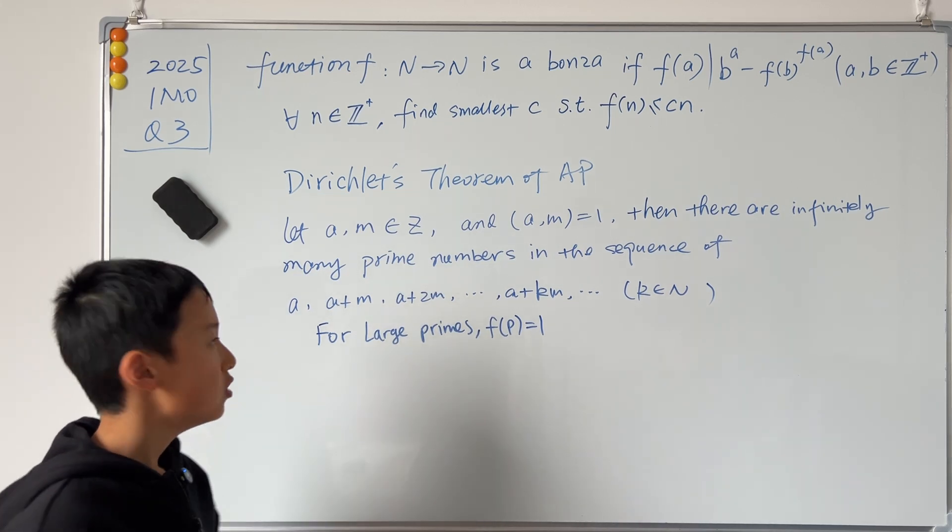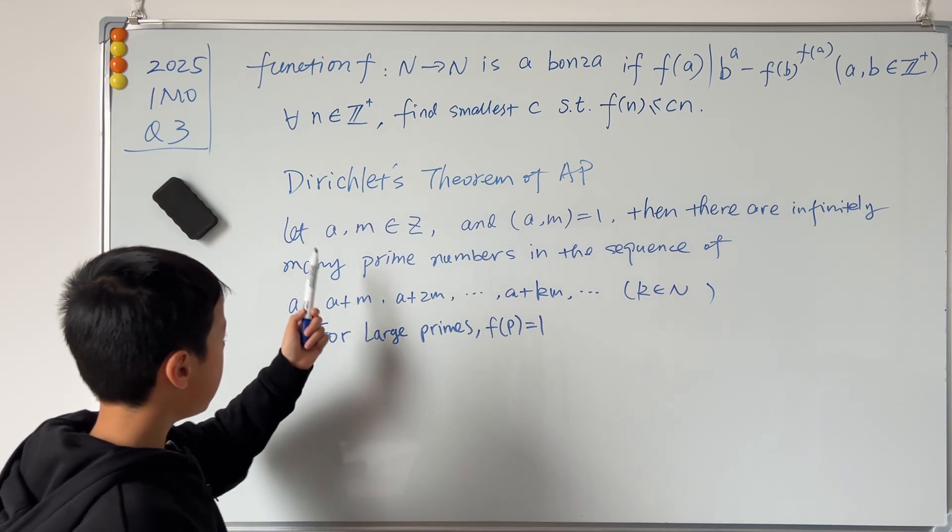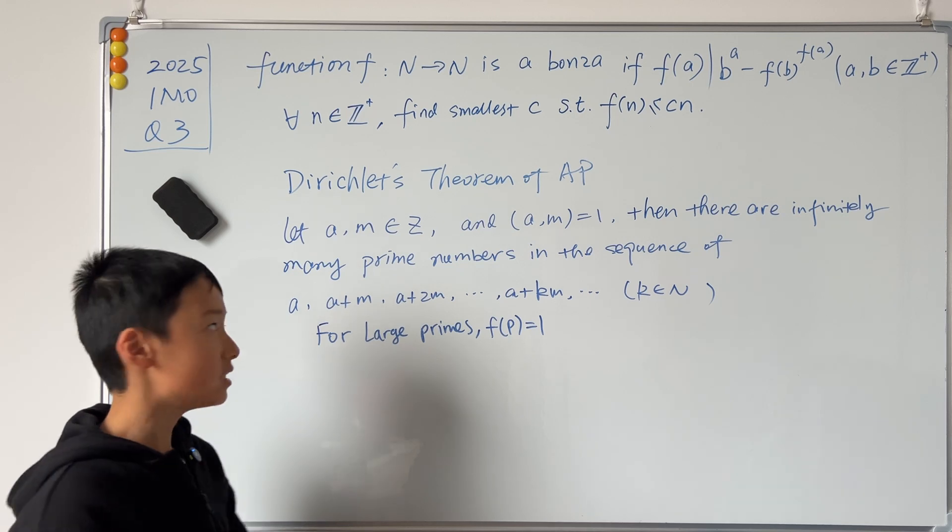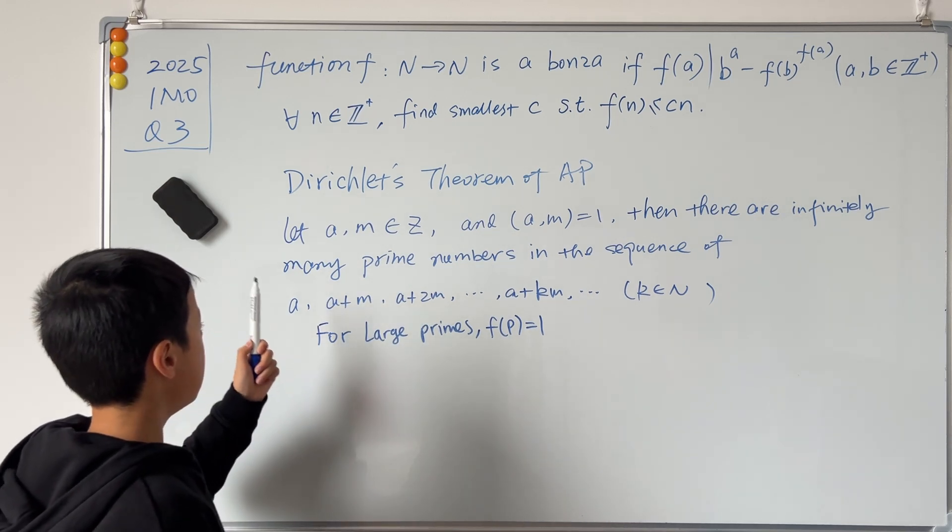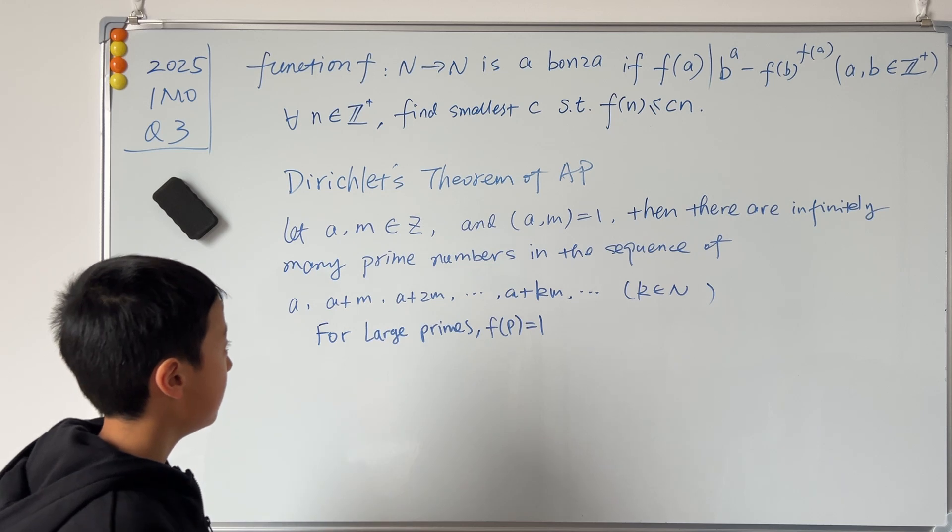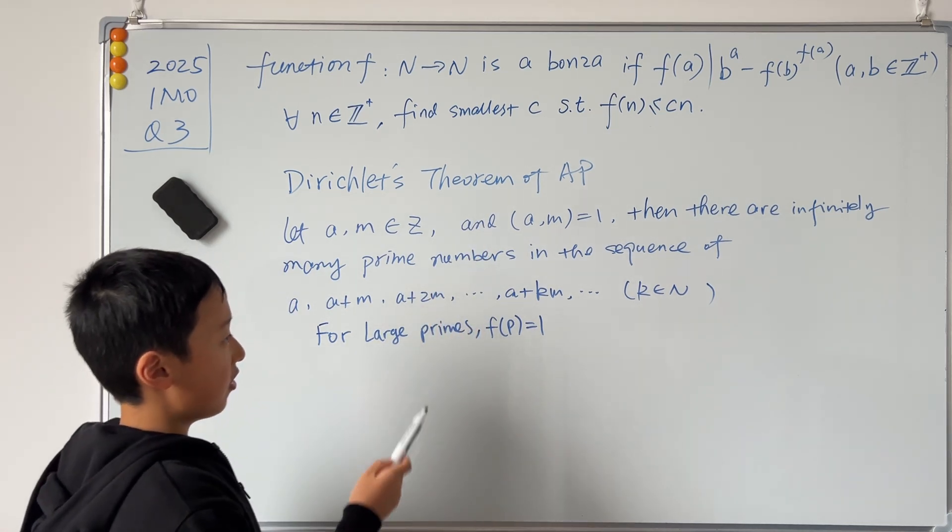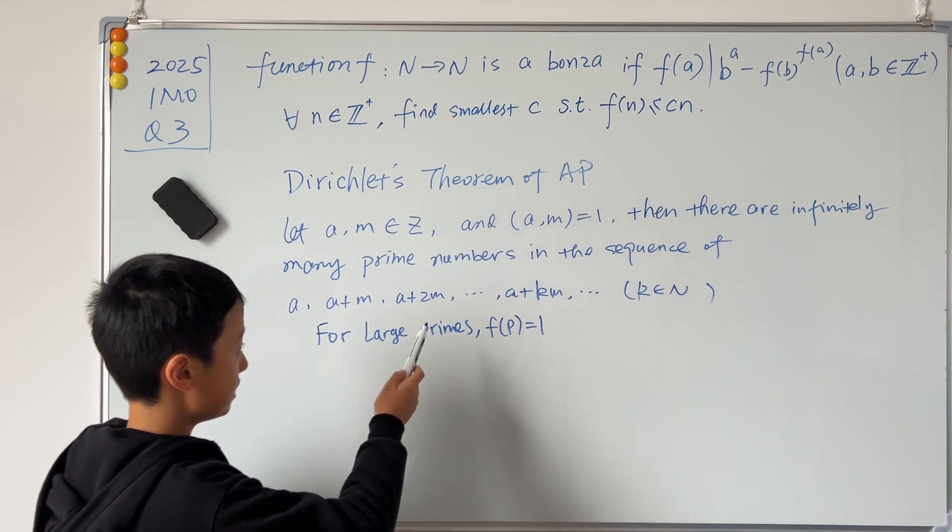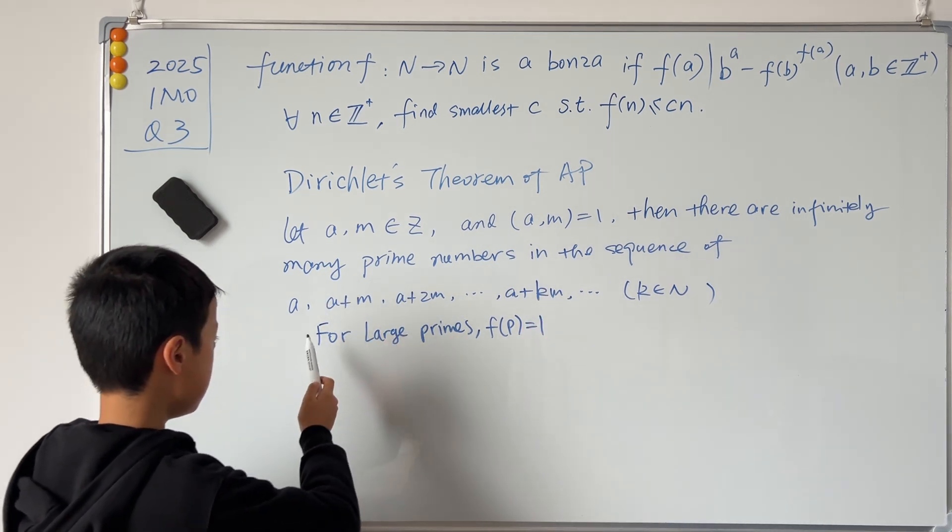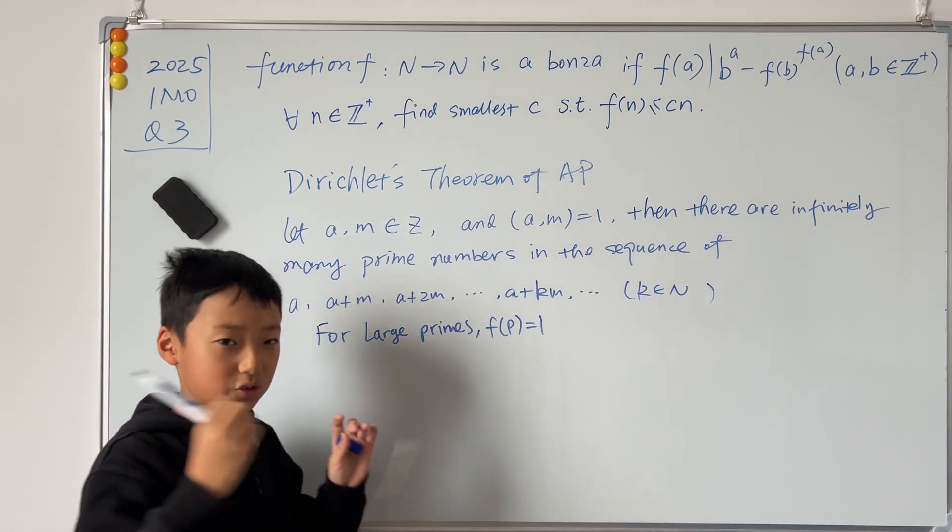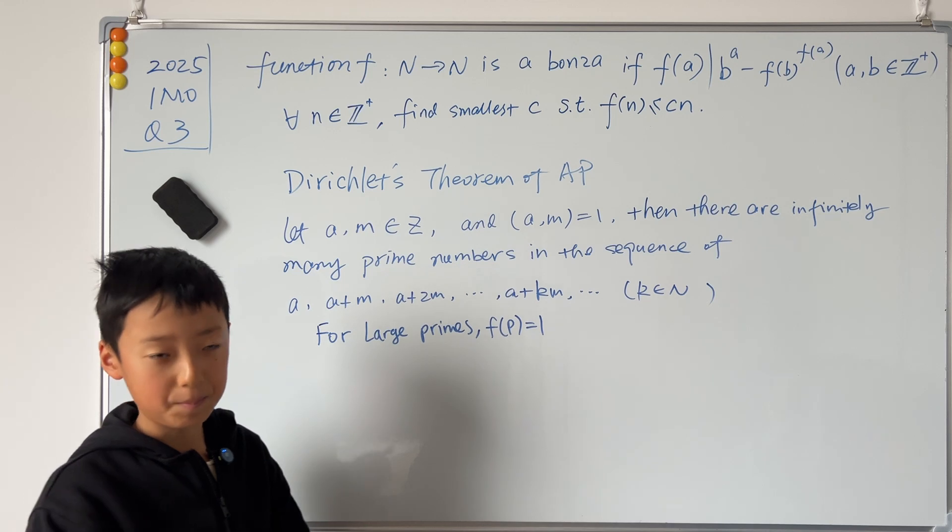Well, to do that, we need to use something called Dirichlet's Theorem of Arithmetic Progressions. It says that let a and m be integers, and a and m are coprime. Then there are infinitely many prime numbers in the sequence a, a+m, a+2m, ..., a+km, ... where k is a natural number.